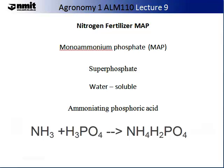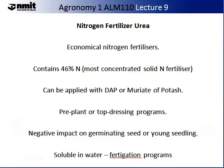Urea is another commonly used nitrogen fertiliser and is regarded as the most concentrated solid nitrogen fertiliser and the most economic to use, containing 46% nitrogen. It can be applied on its own or with other nutrients such as DAP or muriate of potash. It is usually used for pre-plant or top dressing programs. You need to be mindful of potential impacts on germinating seeds or young seedlings, as too high a concentration can burn them. It is soluble in water and can be used in fertigation programs. Urea is also used as a non-protein nitrogen supplement for ruminants such as sheep and cattle, allowing them to make better use of low-protein roughages.